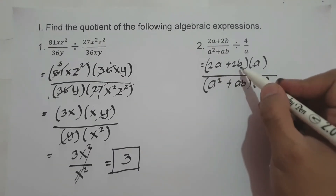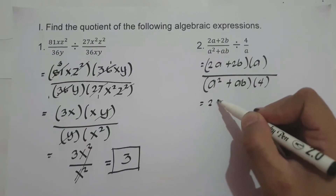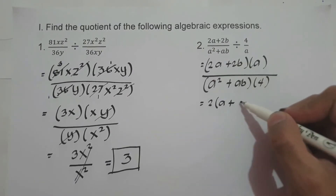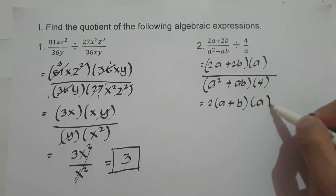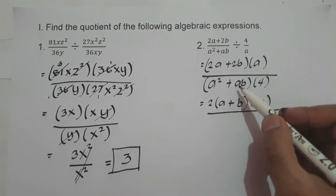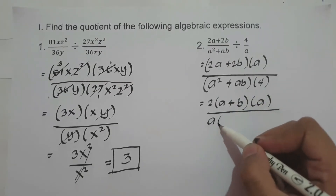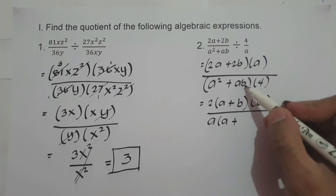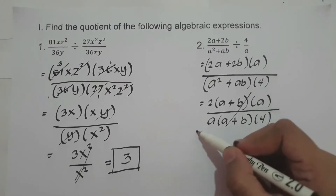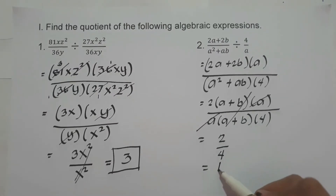As you can see, we have 2a plus 2b — let's find the factors of 2a plus 2b, that is 2 times (a plus b). Then a over a² plus ab: the greatest common factor of a² plus ab is a, so it factors as a times (a plus b). So we have 2(a+b) times a over a(a+b) times 4. Let's cancel (a plus b) and a. So therefore we have 2 over 4, that is 1/2. This will be our final answer.